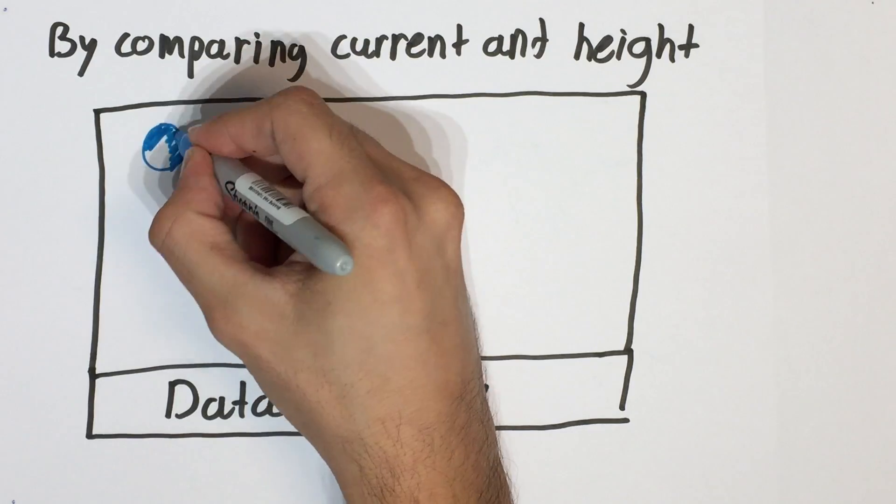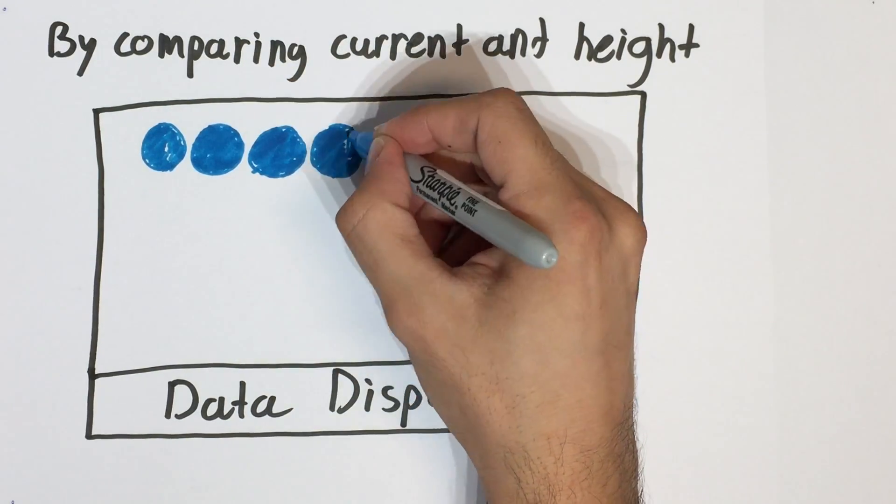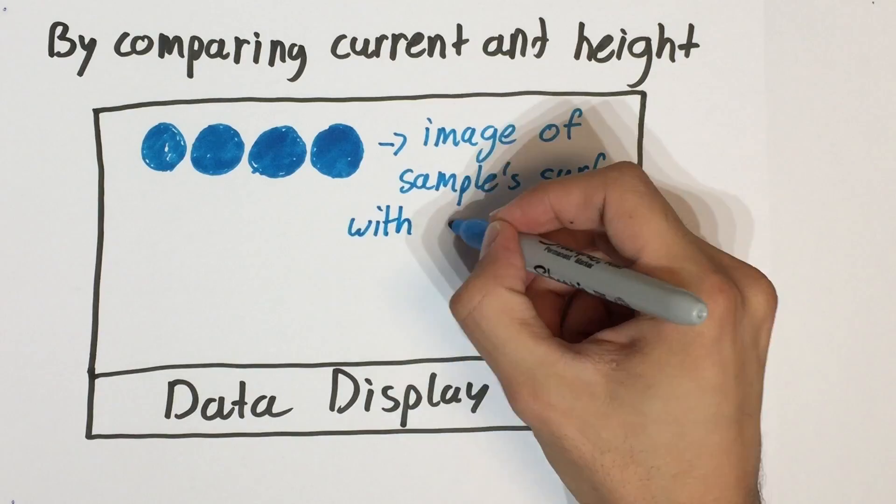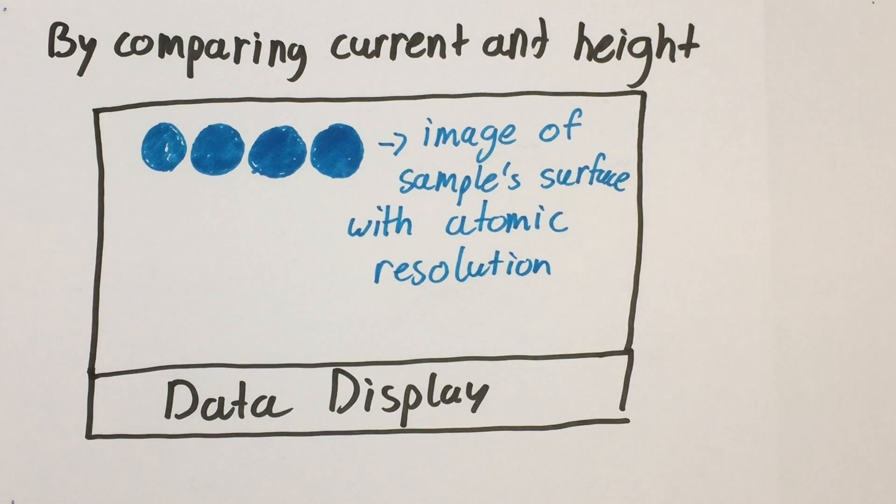In the final step of both methods, we analyze the data of current and height that we have gathered and we use them to display the whole surface of the sample with atomic resolution.